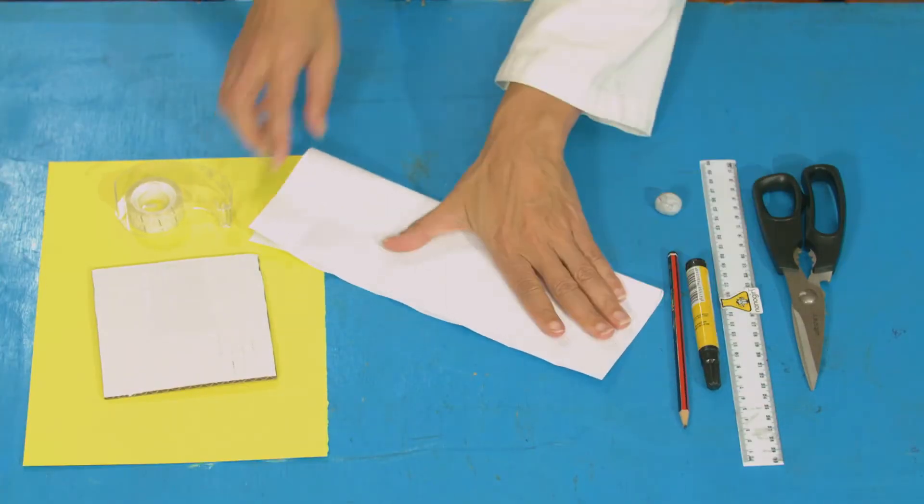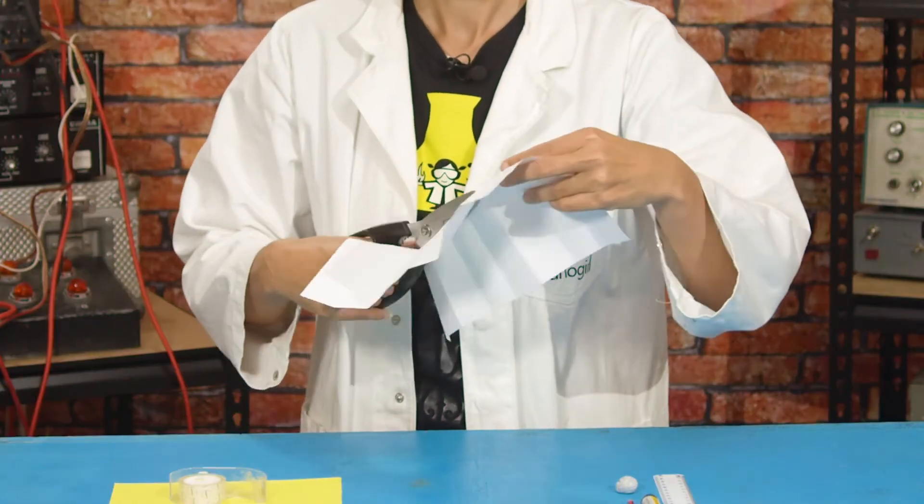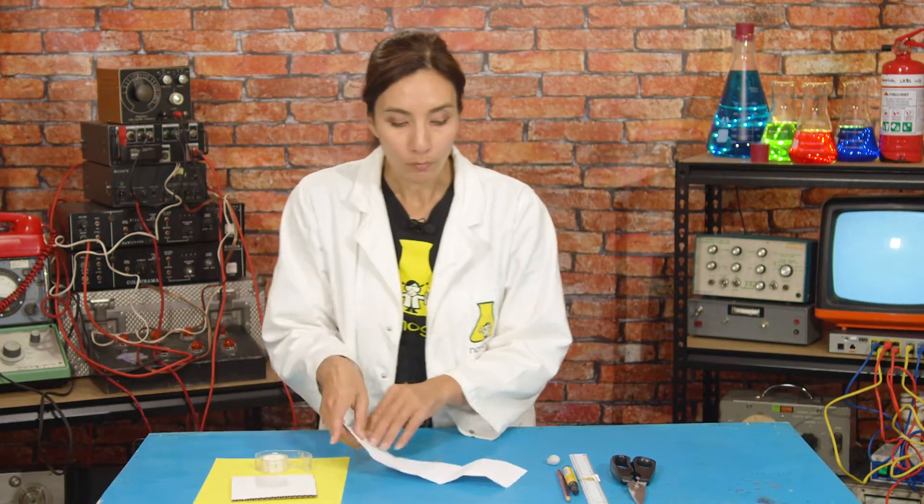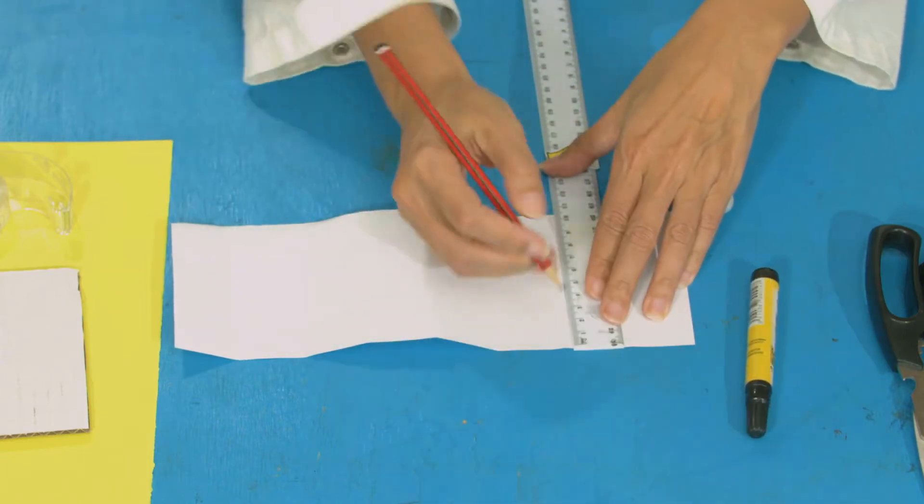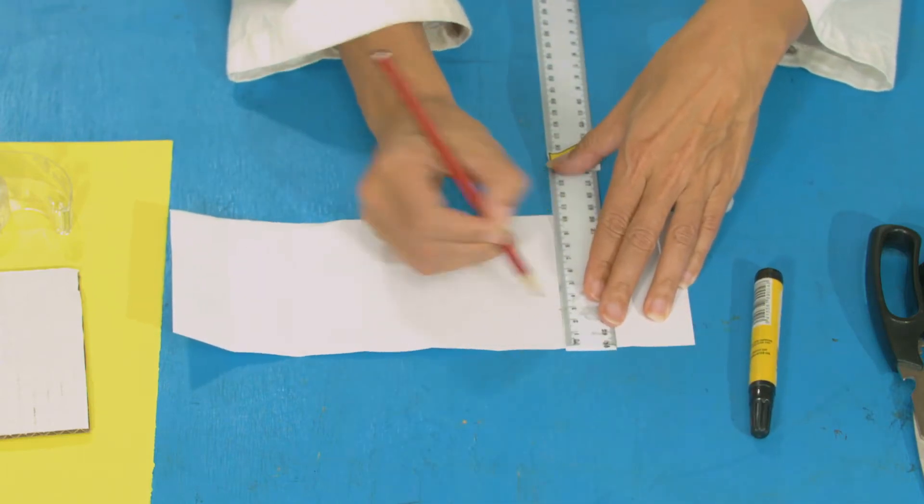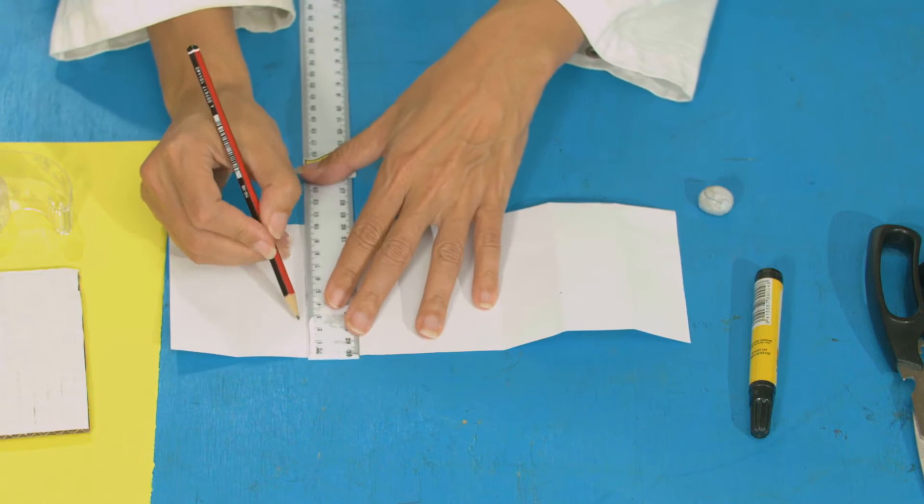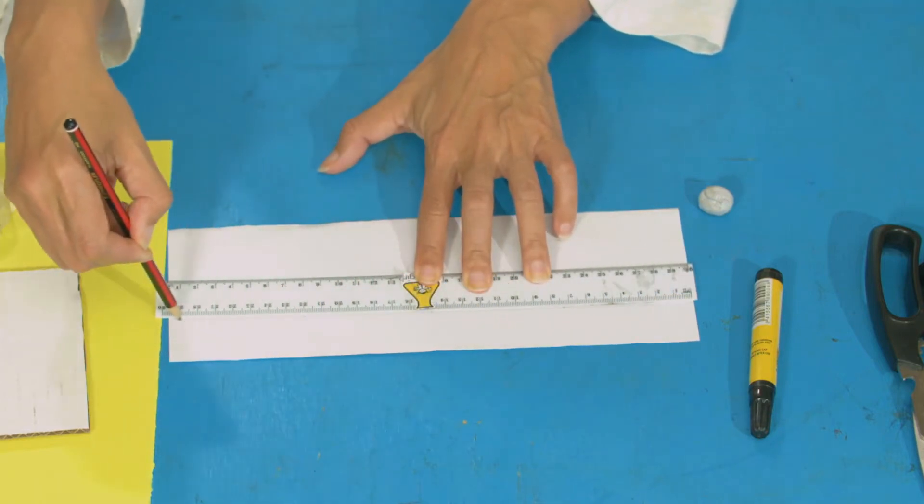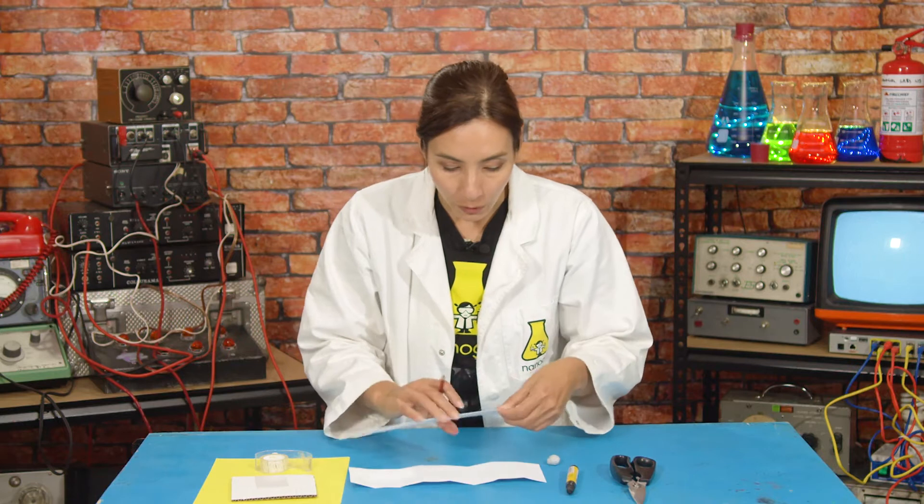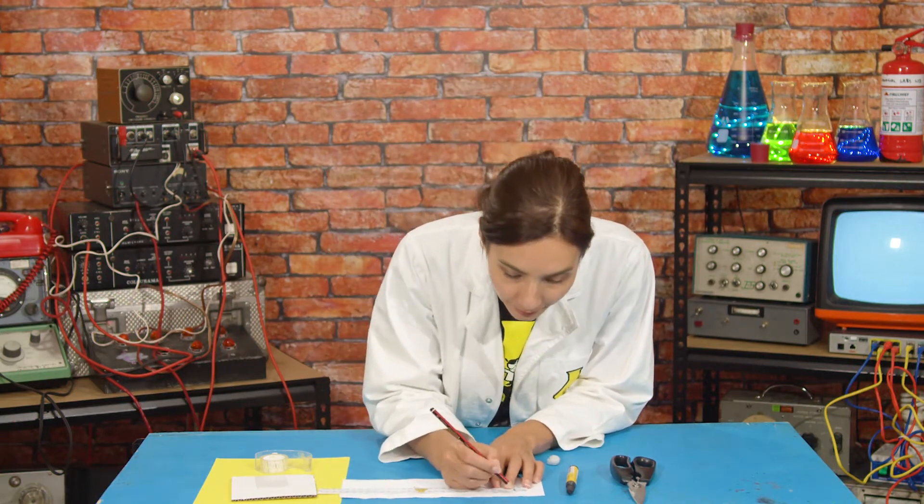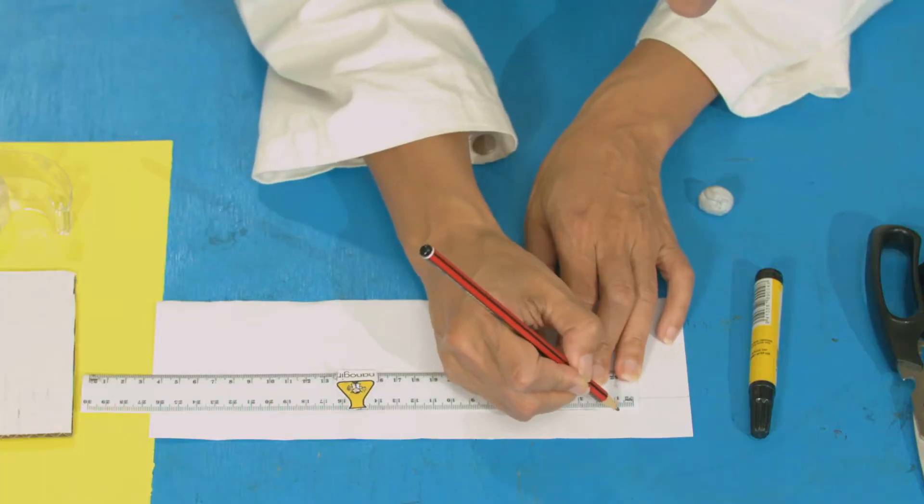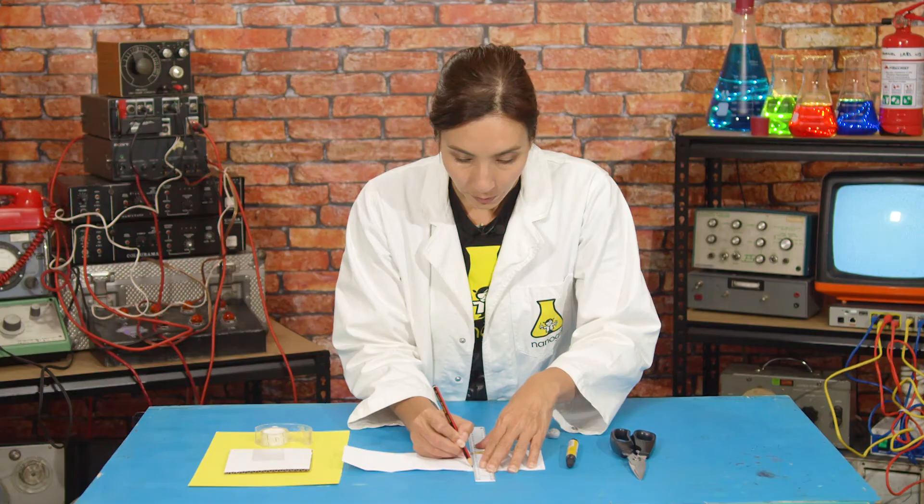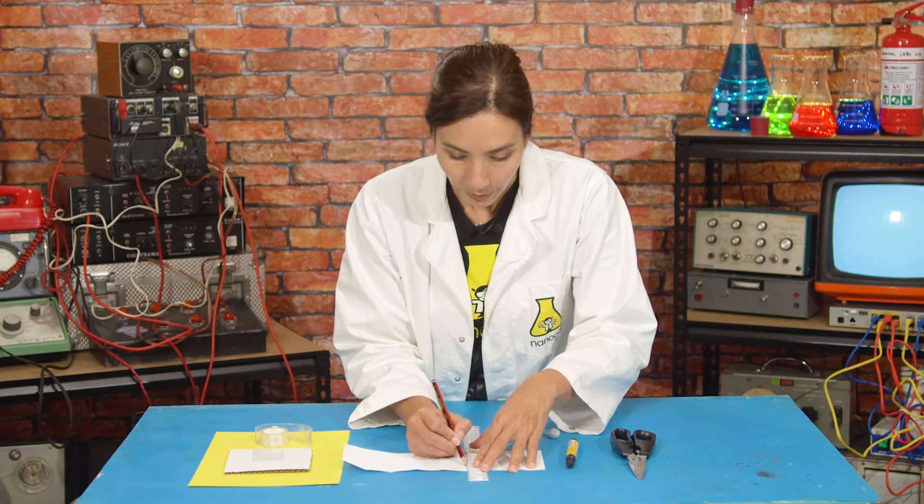Now fold it once in half the other way and you're going to cut along that fold. Now you need to do some measuring with your ruler. So you want to measure three centimeters down from the top and draw a line across there and then you want to draw three millimeters either side of each crease. One, two. Draw lines down from each of those.